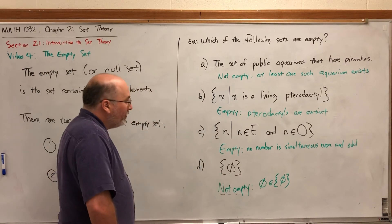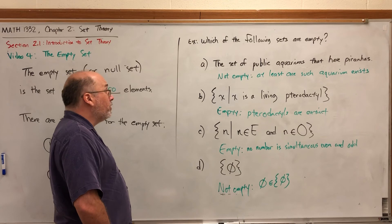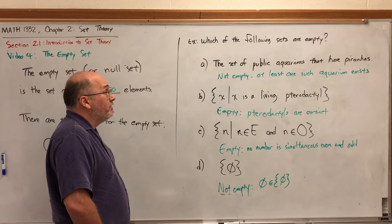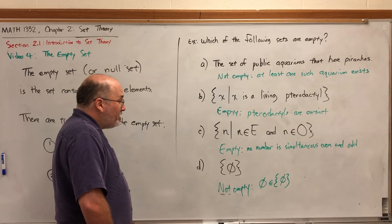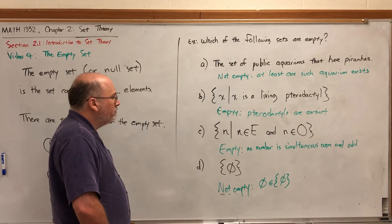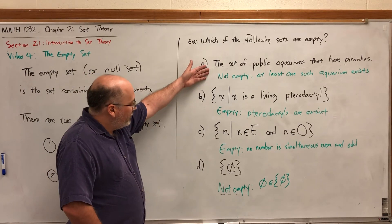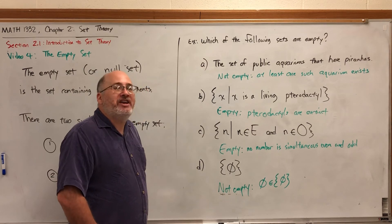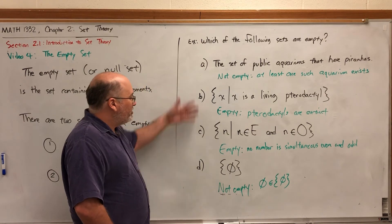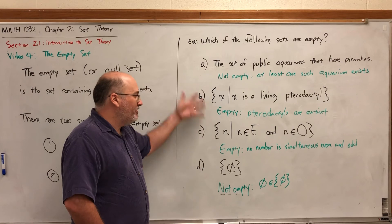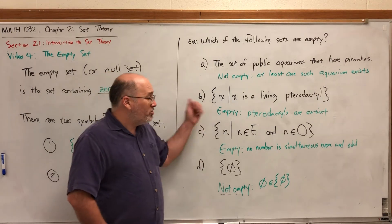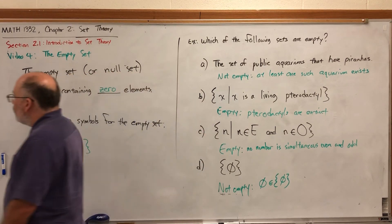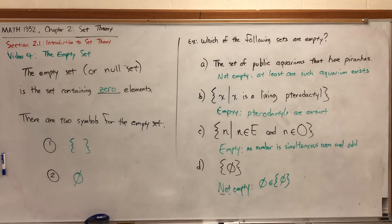Other than that last example, it's usually pretty trivial to determine whether a set is empty or not. Sets A and D contained elements and were non-empty. Sets B and C did not contain any elements and were therefore empty. In fact, those two empty sets are equal — more about that in the near future when we talk about sets being equal. You can probably figure out what it means; it's fairly intuitive.